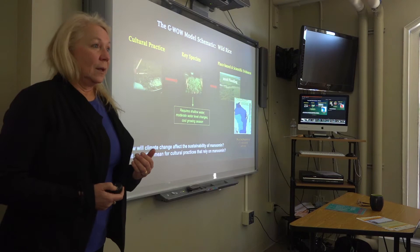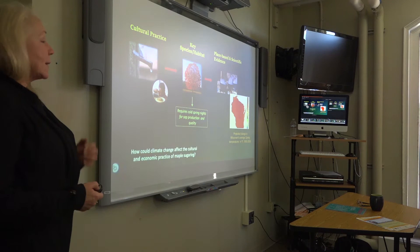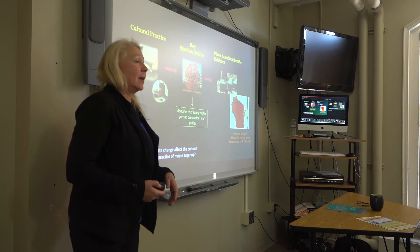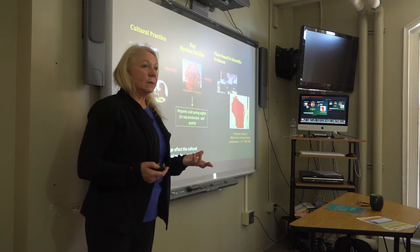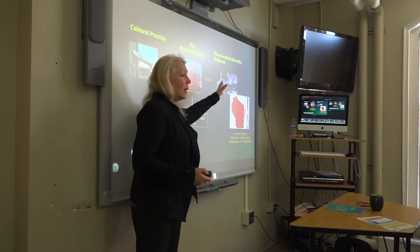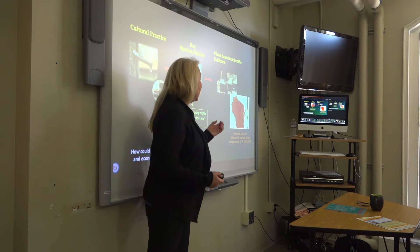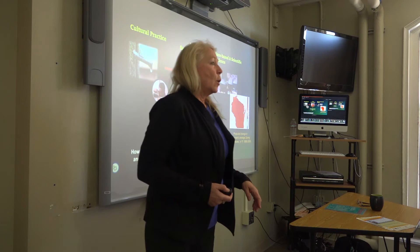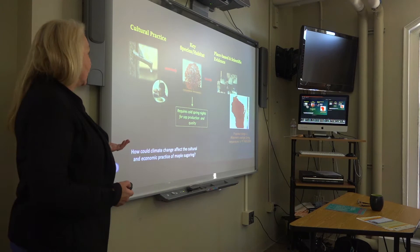Here's a cultural practice you might be doing right now: maple syrup. Relies on sugar maple trees that require cool spring nights for sap production and quality. How has it been going with maple syruping? The last couple of years, very up and down — we've had really, really warm nights. If we look at projected changes in Wisconsin's spring temperatures, we're going to have about a 6-degree increase in spring temperatures, which is going to affect the maple syrup runs. Those temperatures are coming on faster, affecting maple syrup production — which could affect you if you like pancakes with maple syrup, or if you're a producer and that's money for your family.